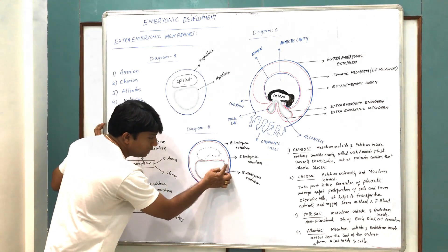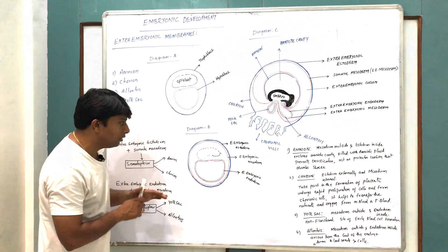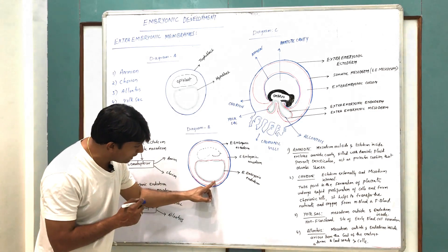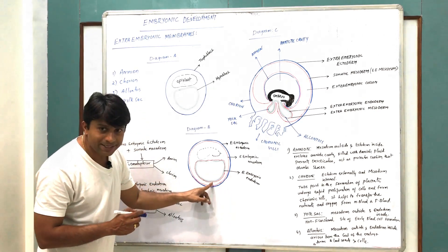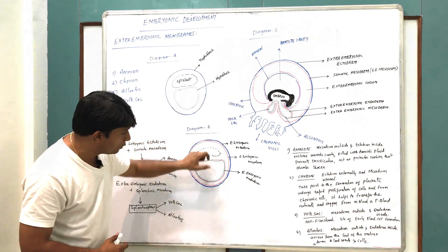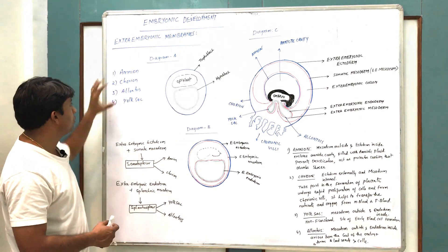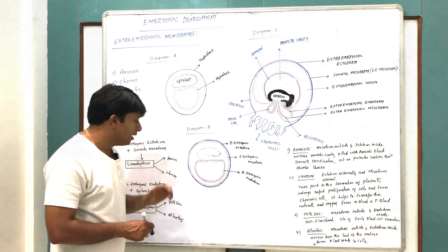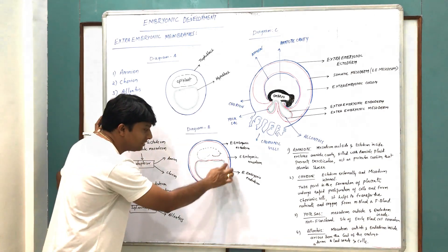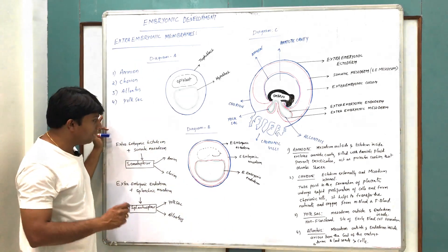These two are the mesodermal layers. The mesoderm towards the extra-embryonic ectoderm is called somatic mesoderm, and the mesoderm beneath the extra-embryonic endoderm is called splanchnic mesoderm. The extra-embryonic ectoderm, extra-embryonic endoderm, and the splanchnic as well as somatic mesoderm are involved in the formation of these four extra-embryonic membranes, because the entire epiblast transforms into the embryo while these layers are located outside the embryo.